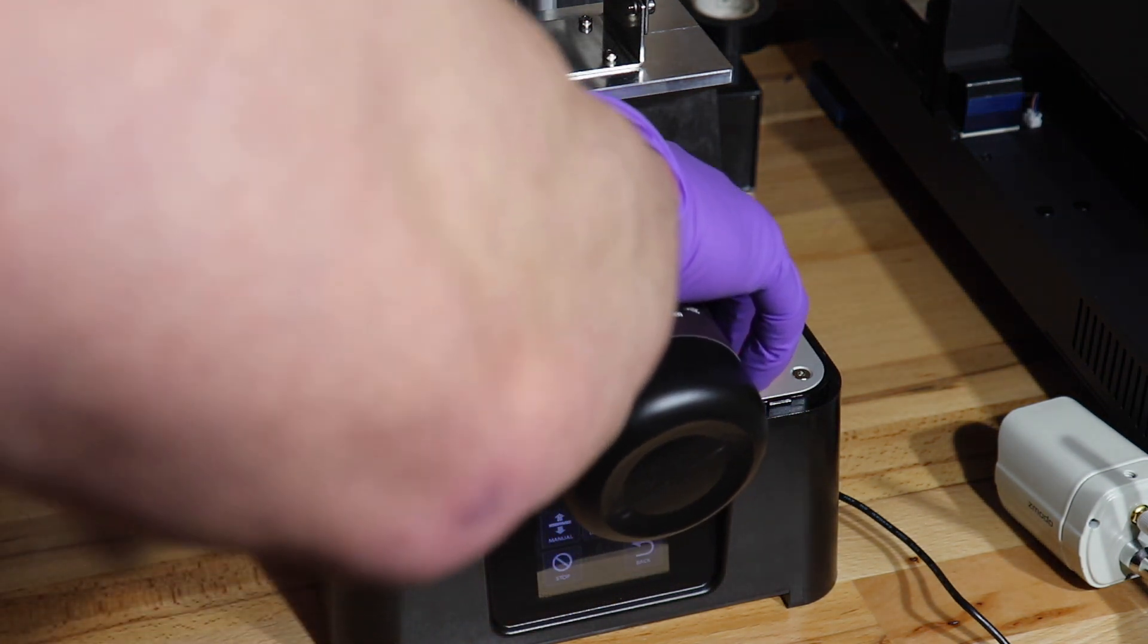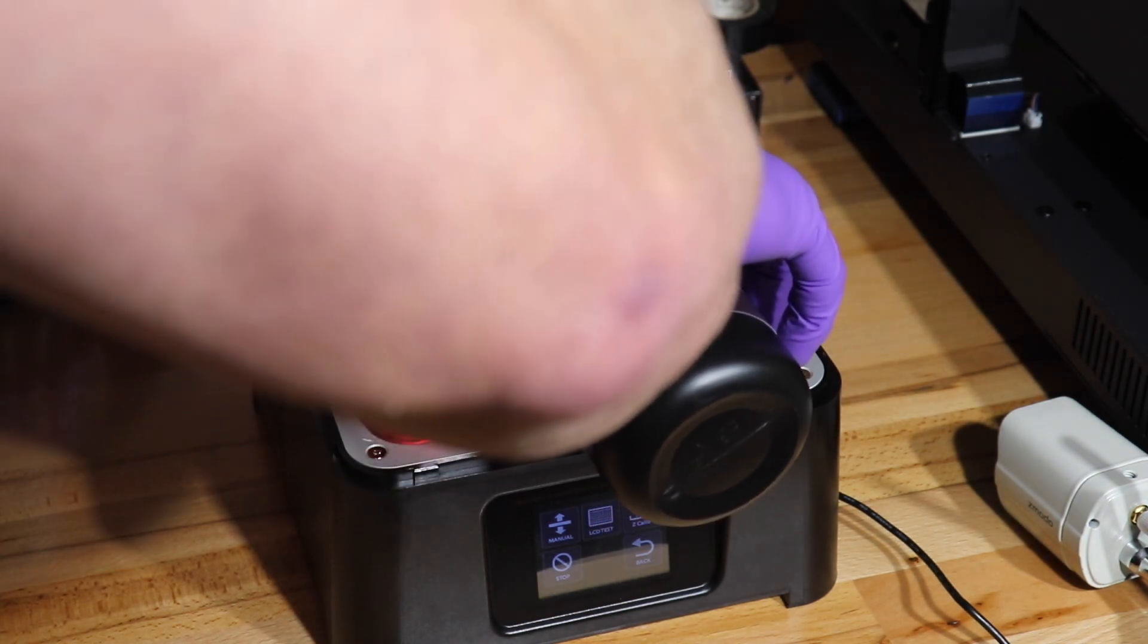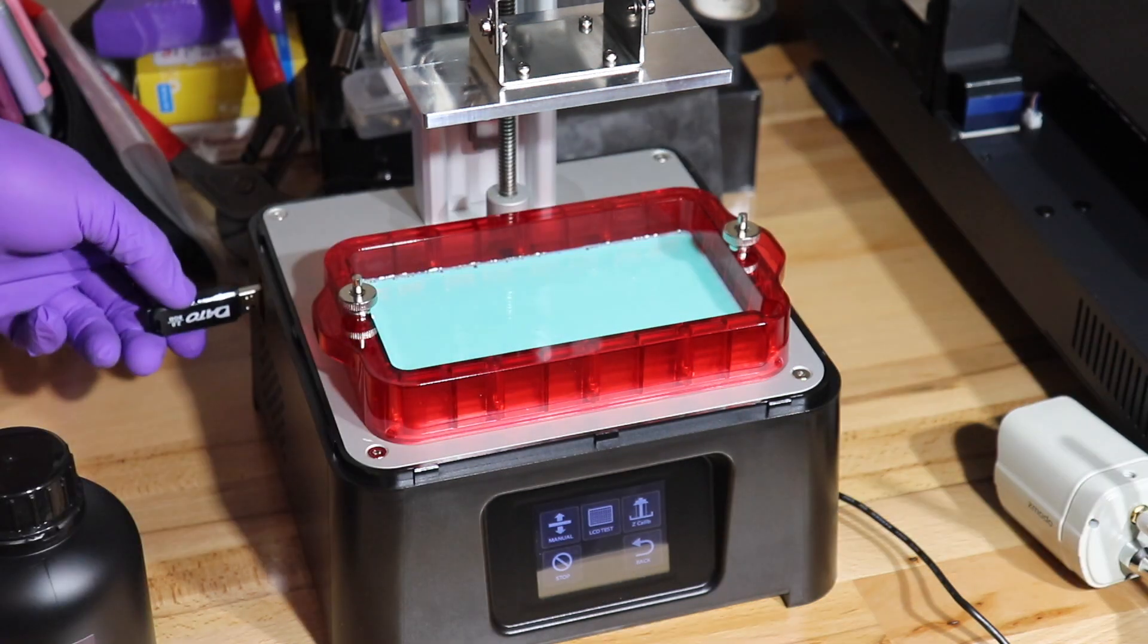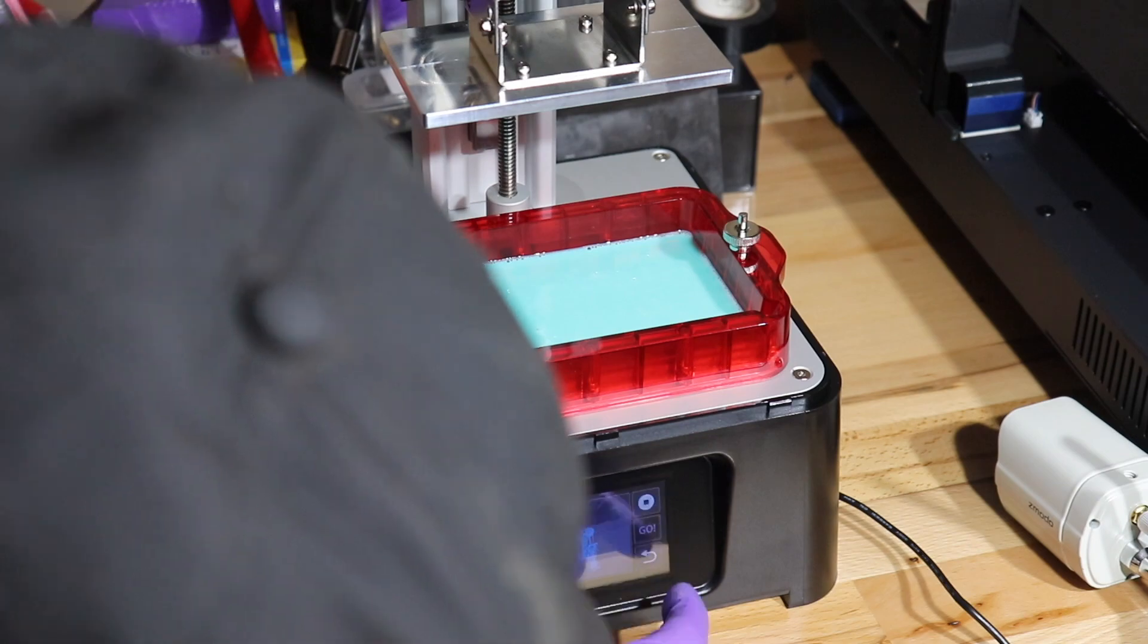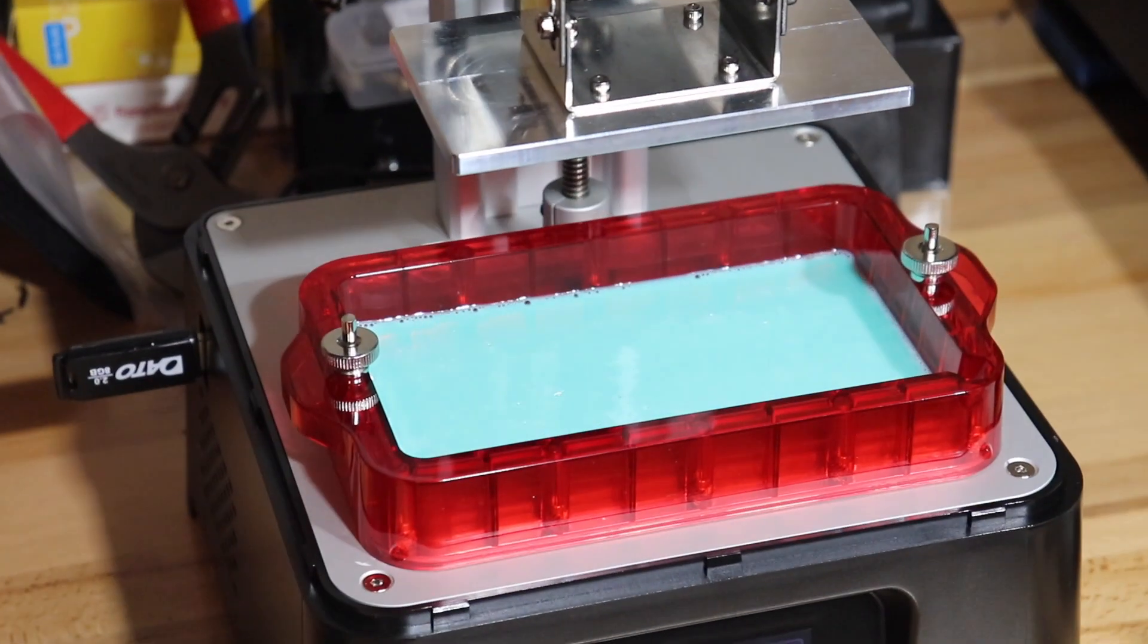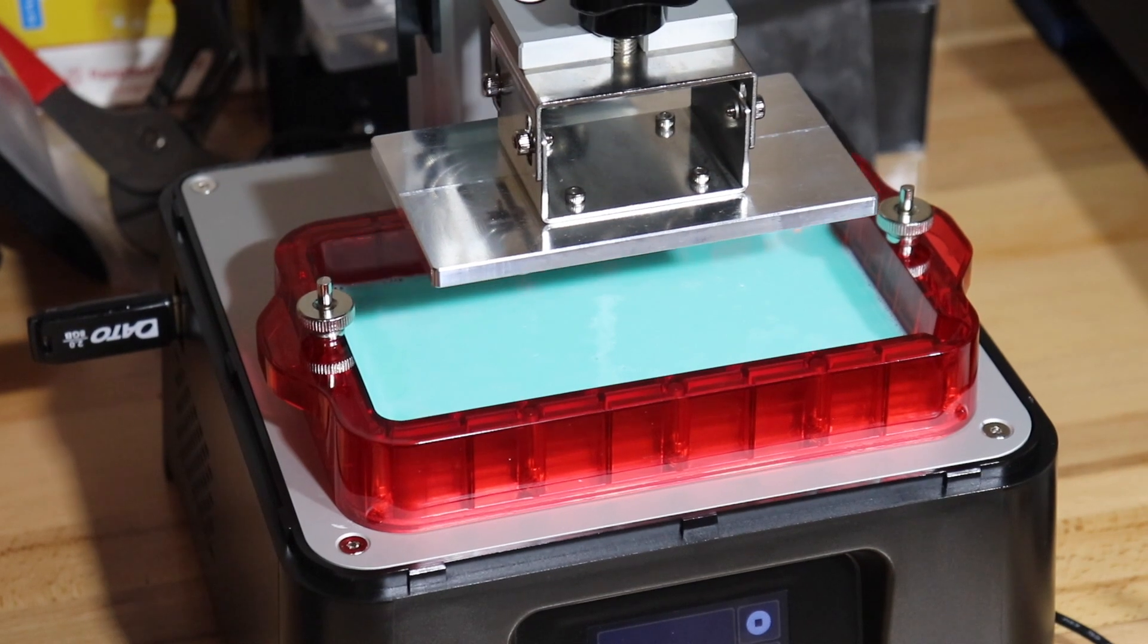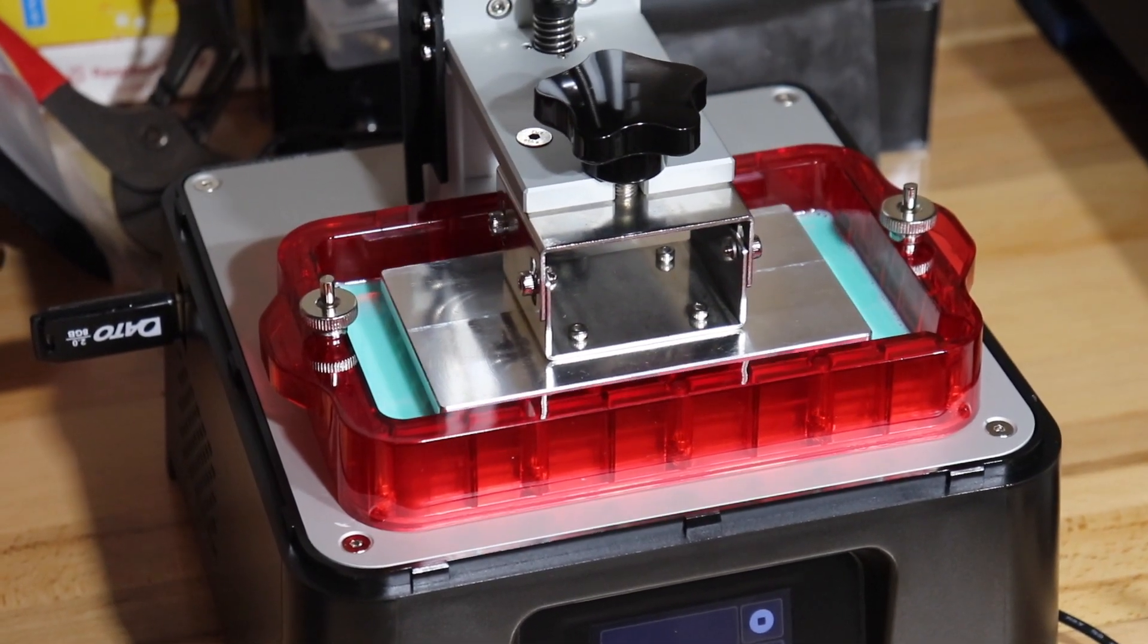You need to shake the resin for about two minutes before you pour it in. This is me doing that right here for my first print, 20 minutes into owning the machine after unboxing and everything. The ease of use is great, I mean very easy. I set up my first file in Chitubox, sliced it with my own supports using minimal supports. This is the first time the build plate is going into the resin.